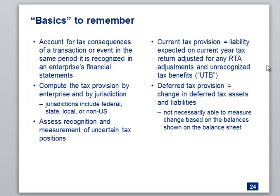The second bullet: compute provisions by jurisdiction. When you go to a big company like NetApp — a big technology storage company that does business all over the world — when they compute their tax provision, they do it by jurisdiction. They don't do the world at once. They'll look at Mexico, calculate their Mexico provision, then move to Korea and do their Korean provision, add it all up, and that's their global consolidated provision.